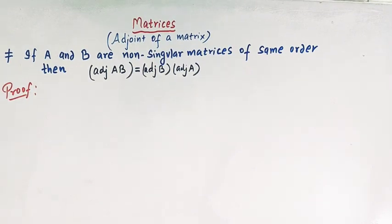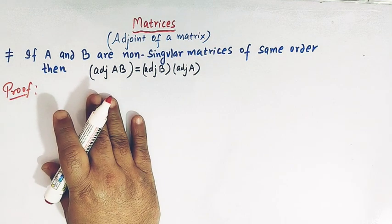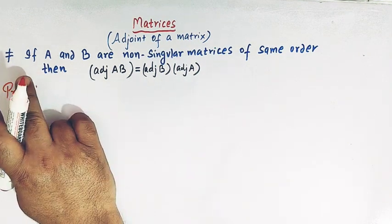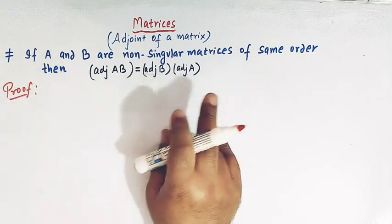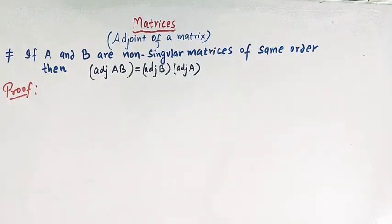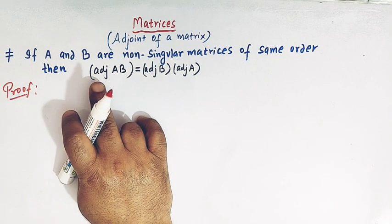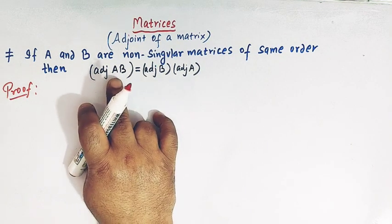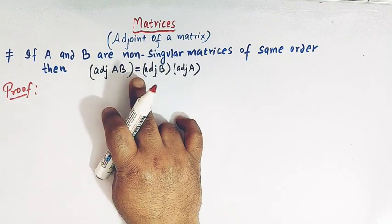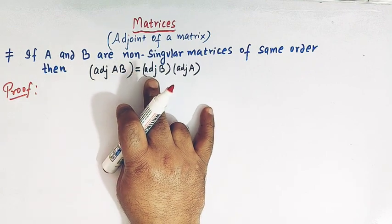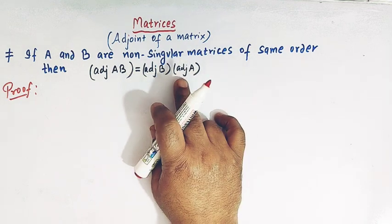Hello viewers. In today's class we are going to discuss a very important result from matrices related to the adjoint of a matrix. We are going to prove that if A and B are non-singular matrices of the same order, then the adjoint of the product AB is equal to the product of adjoint of B and adjoint of A.